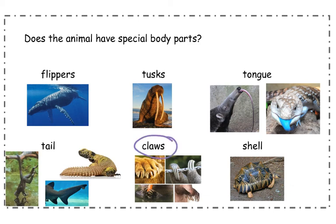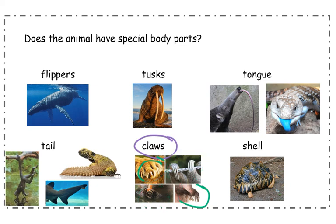Claws or talons can also be a special body part, and they're used for many different things. Big cats like lions, tigers, cheetahs, jaguars, and leopards all use their claws for hunting. But this sloth is not using his claws for hunting — they help him hang on to the trees. This otter's claws help them hold on to their food. And this aardvark's claws are good for digging. So claws can be used for lots of different things.